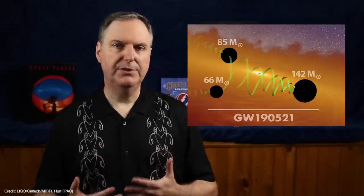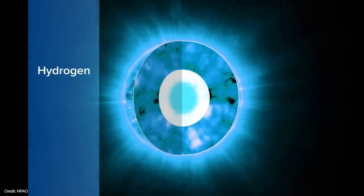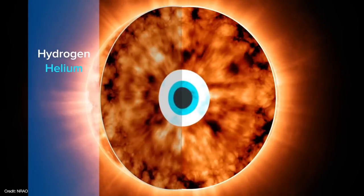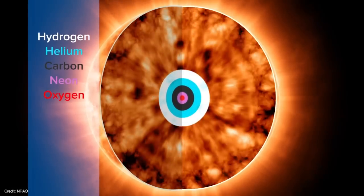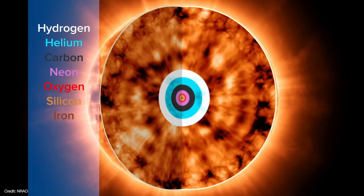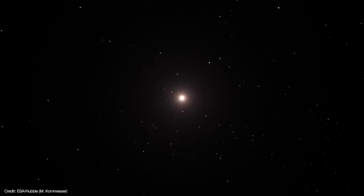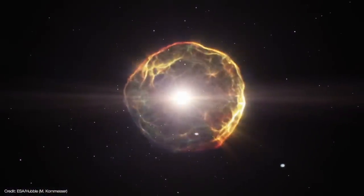To understand why, let's consider how stellar mass black holes are made. As massive stars age, their cores produce heavier and heavier nuclei. When the core is fused into iron, the star collapses under its own weight. This triggers a core-collapse supernova that leaves behind a stellar mass black hole. It's thought that stars up to 130 solar masses can produce black holes up to roughly 65 solar masses.